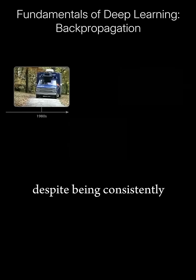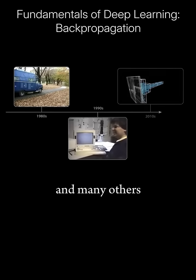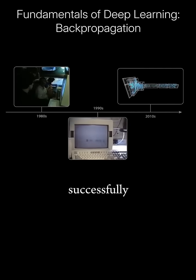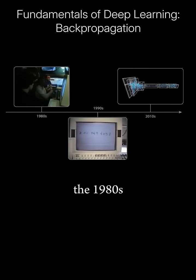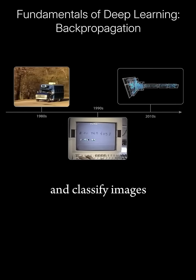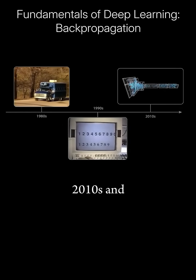However, despite being consistently underestimated by Minsky and many others, backpropagation just kept working, successfully training models to drive cars in the 1980s, recognize handwritten digits in the 1990s, and classify images with incredible accuracy in the early 2010s.